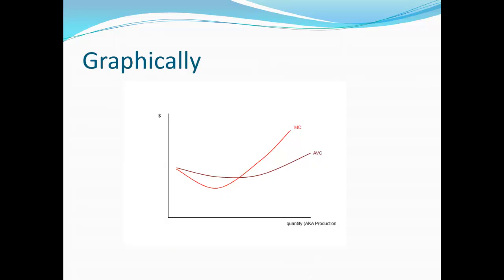Now we can take this and put it all on a graph, and this is going to allow us to figure out what the supply curve looks like for a price-taking firm. As always, we have dollars on the vertical axis, and we have the quantity — or how much is being produced — on the horizontal axis.